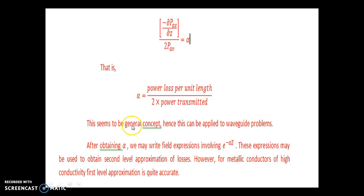This seems to be a general concept hence this can be applied to waveguide problems. After obtaining alpha we may write field expressions involving e power minus alpha z. Please note that this factor was not there in our initial derivation of field expressions, that is the assumed alpha was equal to 0. These expressions may be used to obtain second level approximation of losses. However, for metallic conductors of high conductivity first level approximation is quite accurate.